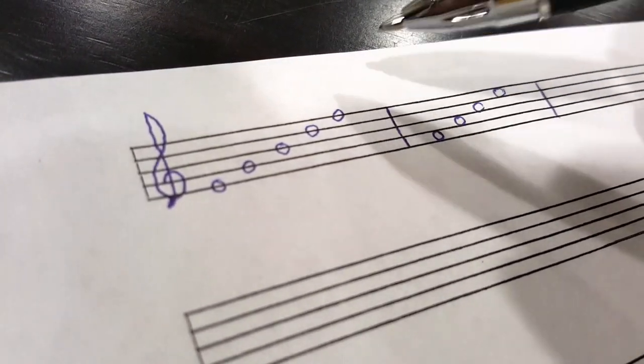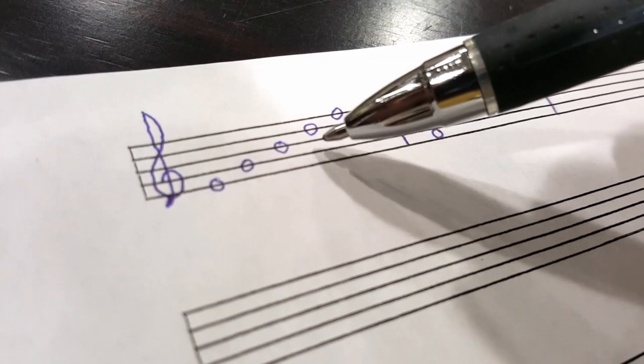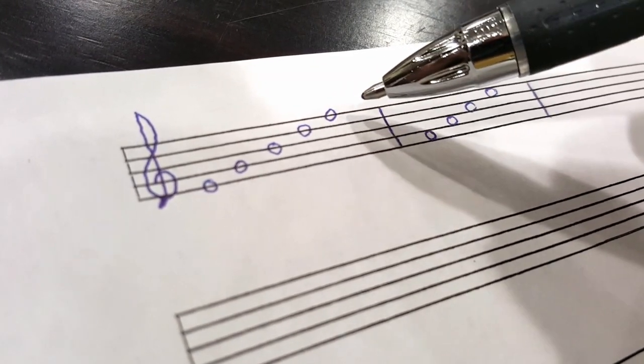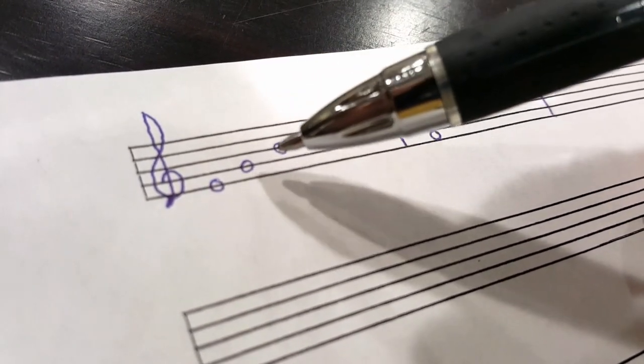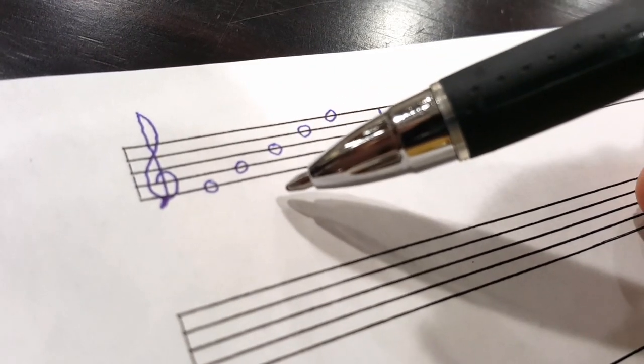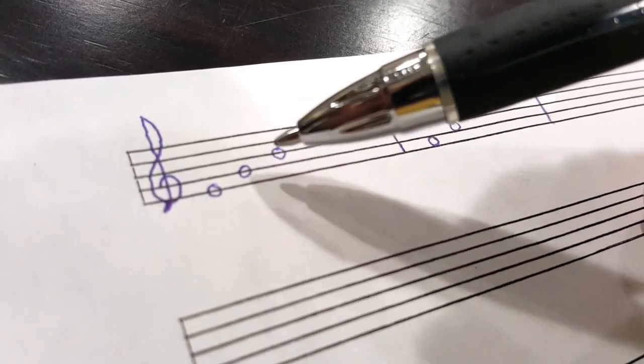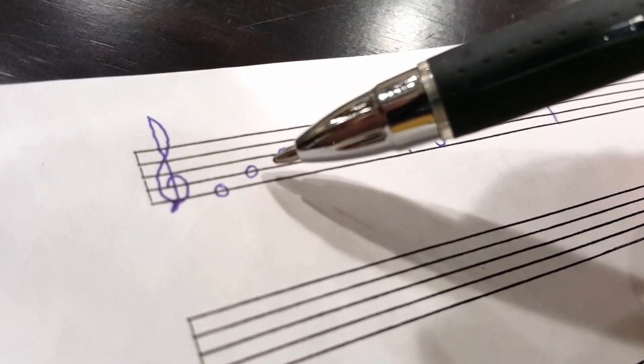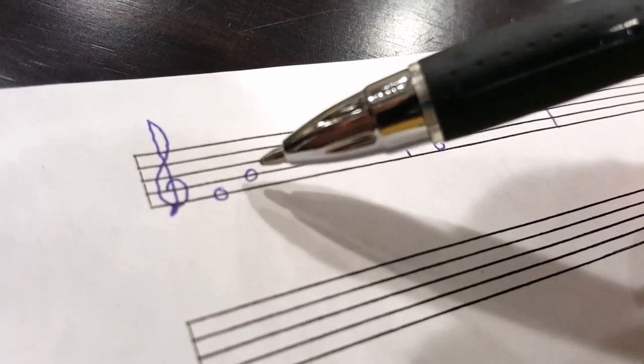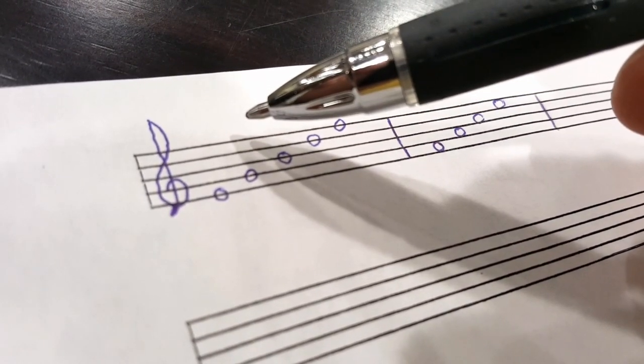For the third line and above, the stems go down on the left-hand side. For the second space and below, the stem goes up on the right-hand side.